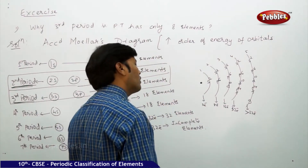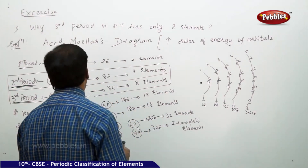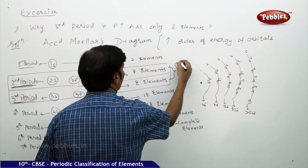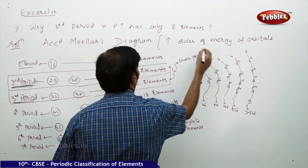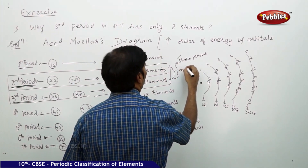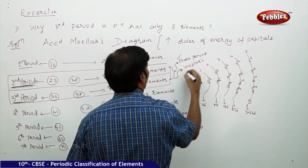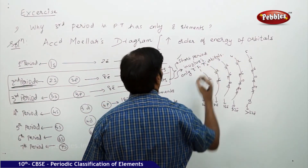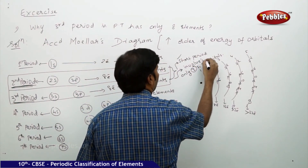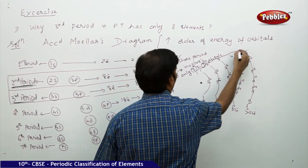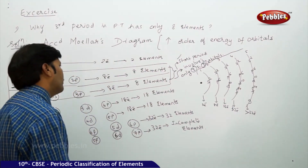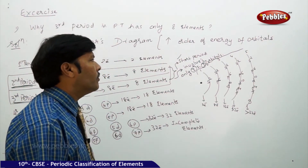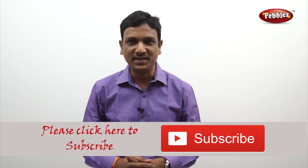What we are doing here is taking this in the form of blocks. The second and third periods contain only eight elements. The reason is very simple — it is a short period because it involves only s and p orbitals. A maximum of eight electrons can be accommodated between the s and p orbitals. That is why the third period has only eight elements: two electrons in the s orbital and six electrons in the p orbital.